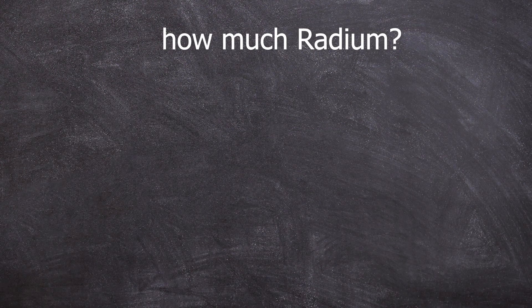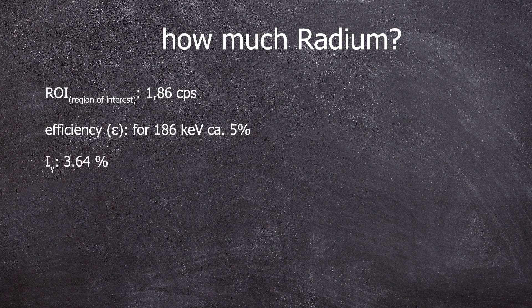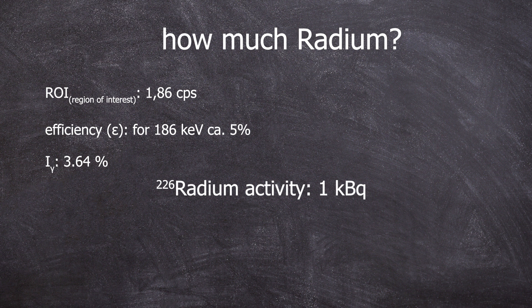Now onto the most important question. How much radium is there? From the gamma spectrum, we can calculate that there is 1 kBq of radium activity based on the region of interest, efficiency, and the occurrence probability of the 186 keV line during the radium decay.